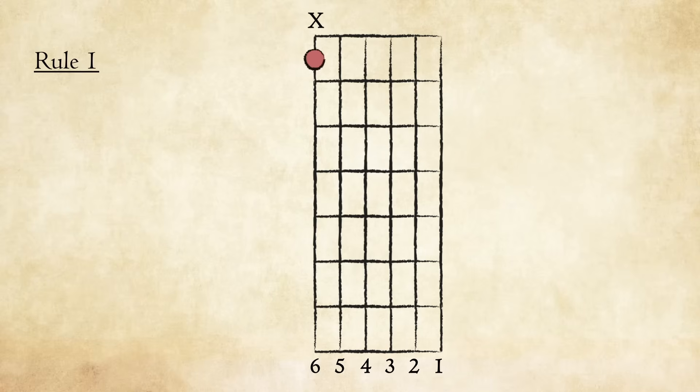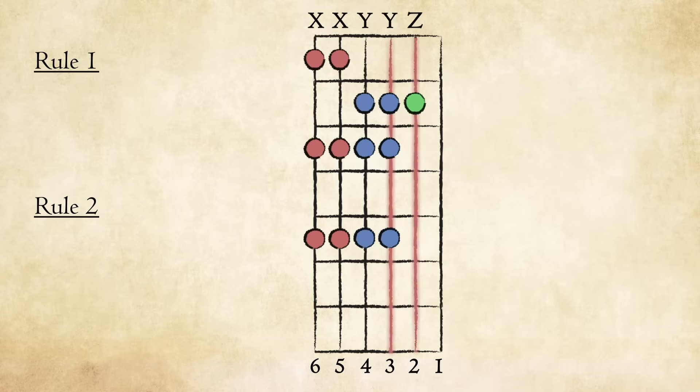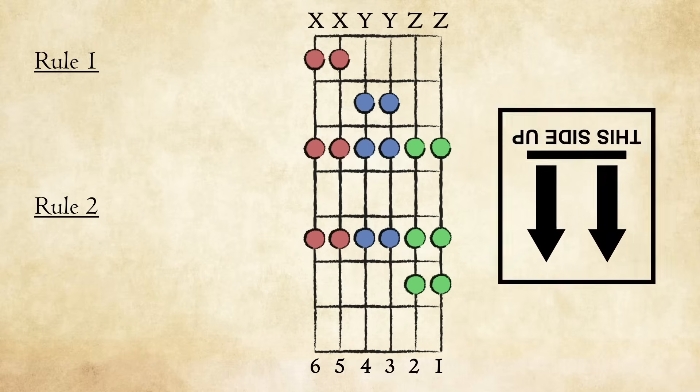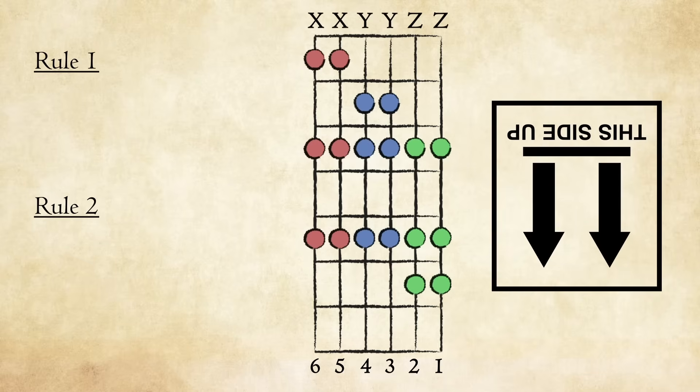There are only two simple rules for adjusting the vertical placement of your finger shapes. Rule number 1: When progressing from shape X to shape Y, the first finger shifts up one fret. Rule number 2: When progressing from the third string to the second string, the first finger shifts up one fret. Note that we are shifting up one fret in pitch, not up in reference to the diagram.